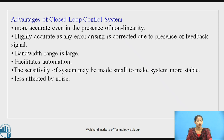The advantages of closed-loop control systems: they are more accurate even in the presence of non-linearity. Highly accurate and the bandwidth range is large. It facilitates automation. The sensitivity of the system may be made small to make the system more stable. They are less affected by noise as external noise disturbances are eliminated.